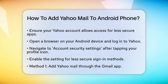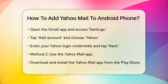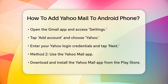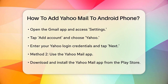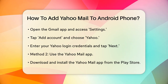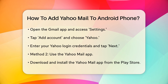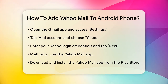Now let's look at a few different methods to add your Yahoo Mail to your Android phone, starting with the Gmail app. Open the Gmail app on your Android device, tap the three ellipses or hamburger menu icon in the top left corner, and then tap on Settings. Here, you can add a new account by tapping on Add Account.